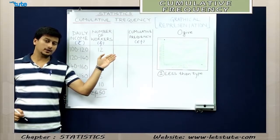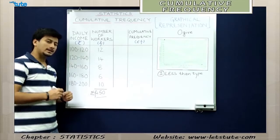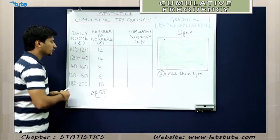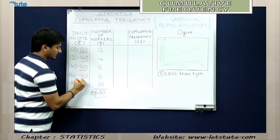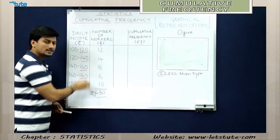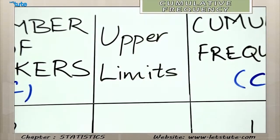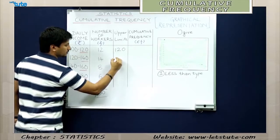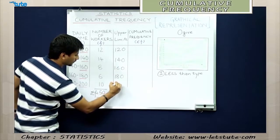Before we calculate the cumulative frequencies, let us address why the name 'less than type.' In this case we take the upper limits. Whenever we say 'less than something,' that something has to be of a higher value. So we say: less than 120, less than 140, less than 160, less than 180, and less than 200. Let us form a column for all these upper limits: 120 is the upper limit for the first group, 140 for the second, 160 for the third, 180 for the fourth, and 200 for the fifth.